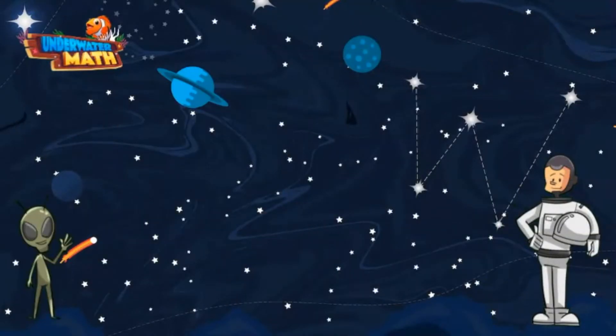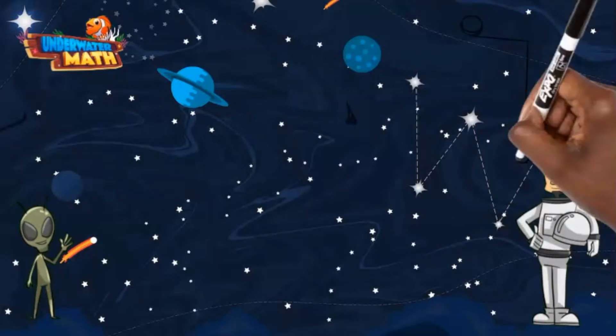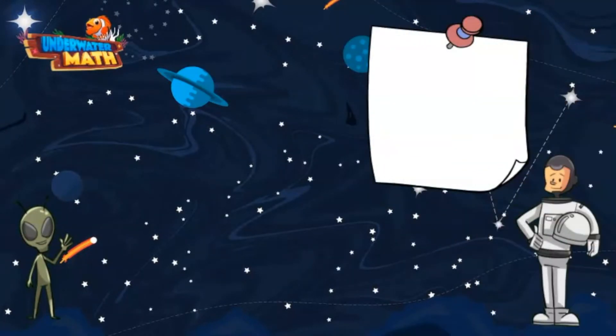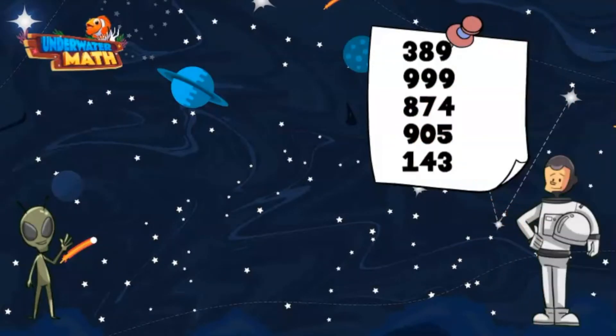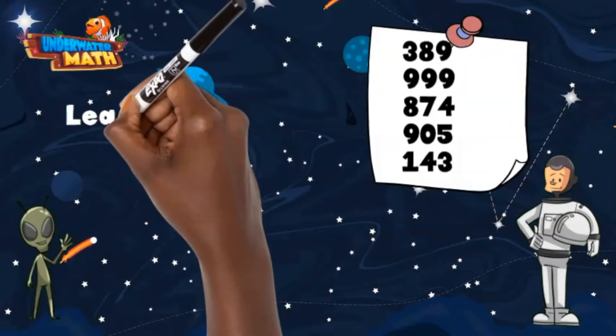What's that Lenny? Lenny wants to try with some larger numbers. He thinks you all can order numbers up to 1000. I think we can do this. Lenny wrote down these five numbers to put in order from least to greatest.